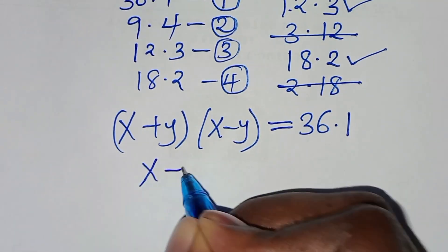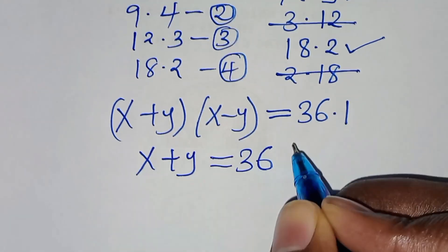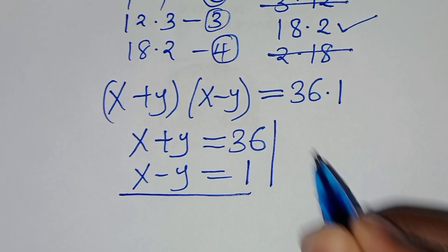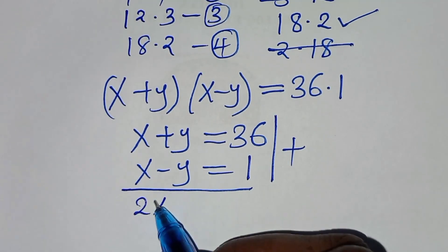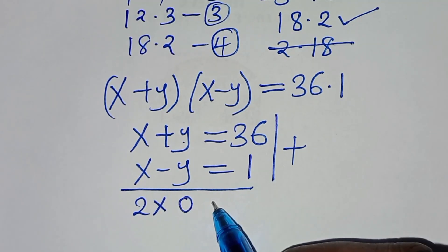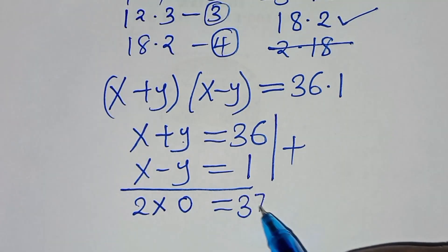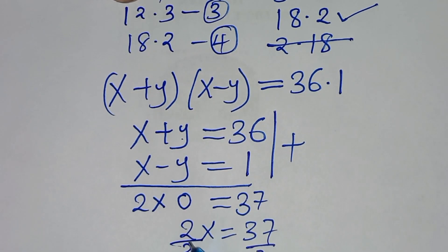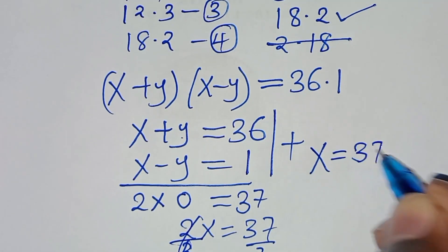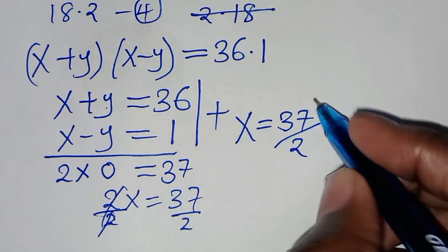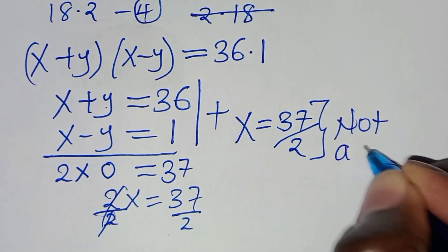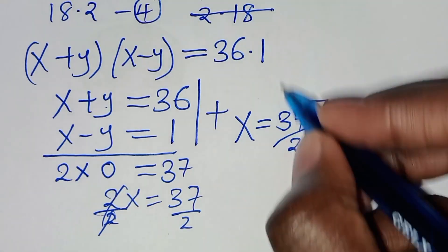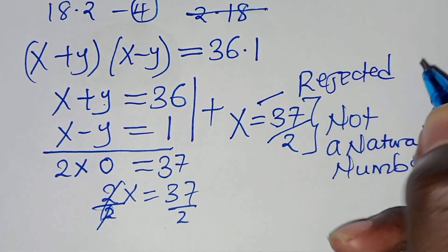So let's form a system of equations. We have x plus y equals 36, and x minus y equals 1. Adding these two equations: x plus x gives 2x, y plus negative y is 0, and 36 plus 1 equals 37. So 2x equals 37, and dividing by 2, x equals 37 over 2. We note that this is not a natural number, so case 1 is rejected.